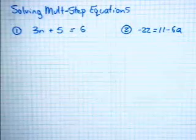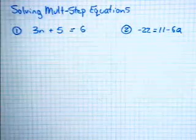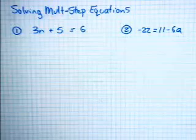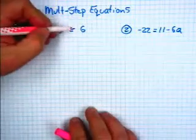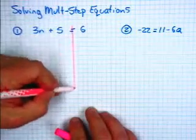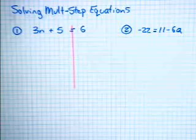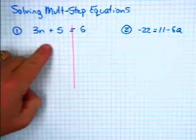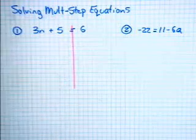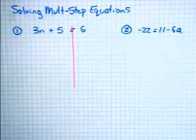Solving multi-step equations. The first thing we're going to remember is that the equal sign is what divides the two sides of the problem — the left side and the right side of the equal sign.